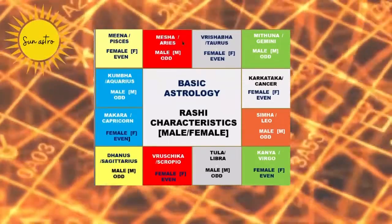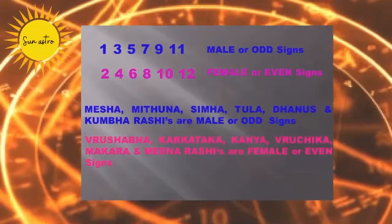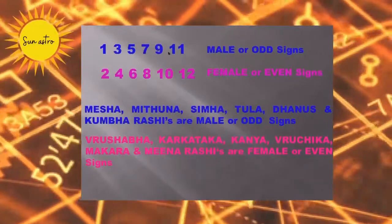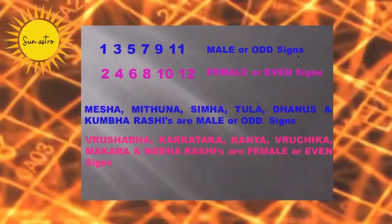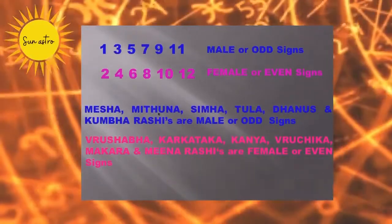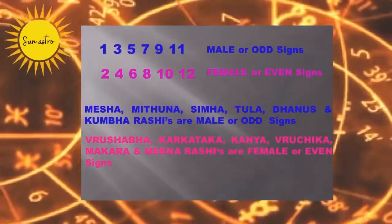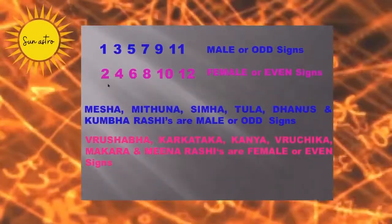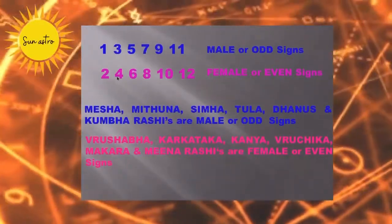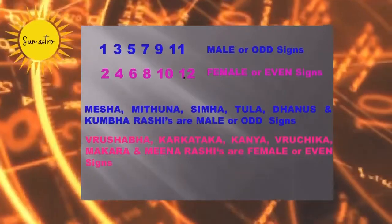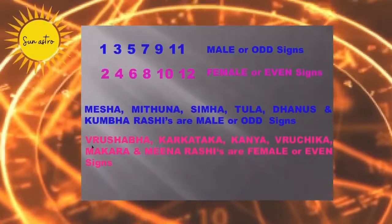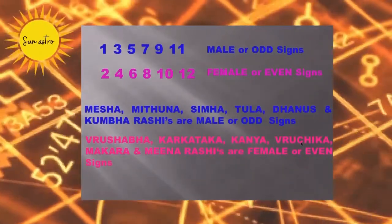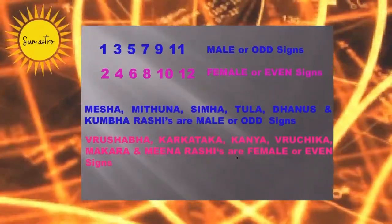Moving to the next slide, we observe that all the odd signs — 1, 3, 5, 7, 9 and 11 — are male or odd signs, i.e. Mesha Rashi, Mituna Rashi, Simha Rashi, Tula Rashi, Dhanus Rashi and Kumbha Rashi. Whereas the even signs — 2, 4, 6, 8, 10 and 12 — are female or even signs, i.e. Rishabha Rashi, Karkataka Rashi, Kanya Rashi, Vruchika Rashi, Makara Rashi and Meena Rashi.